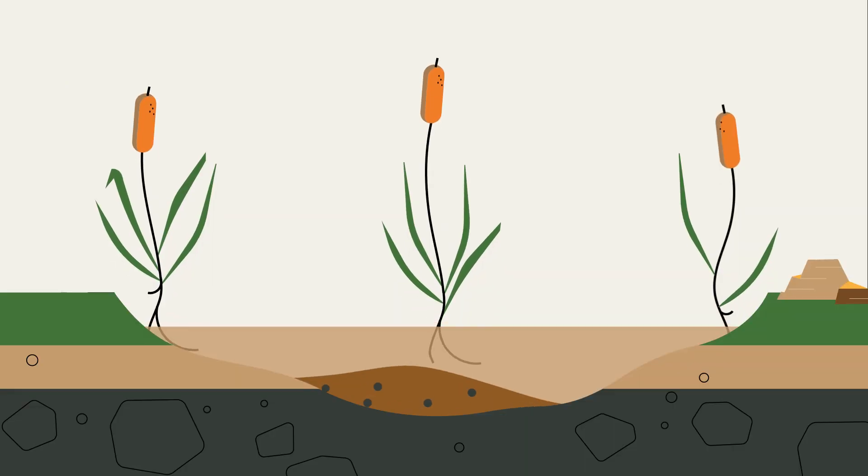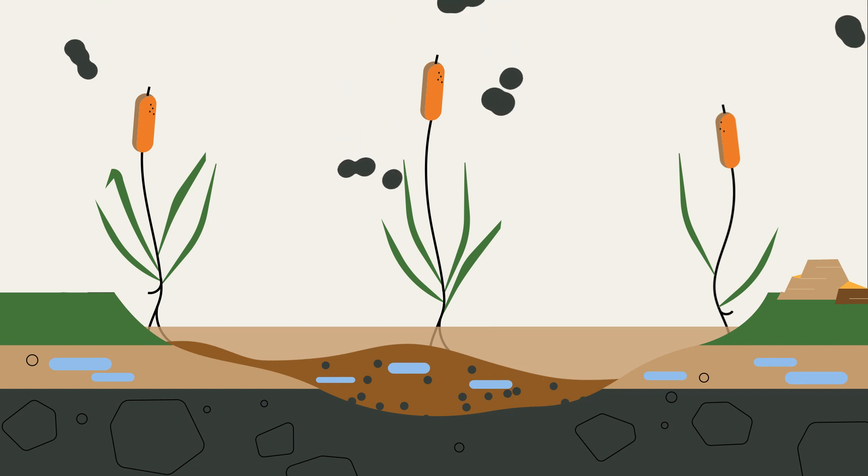To put it simply, the secret of the natural climate guardian's success is this: lots of water, little oxygen. Peatland plants do what plants do. They take up CO2 and bind the carbon in their biomass.